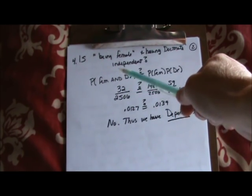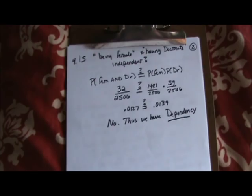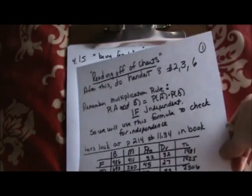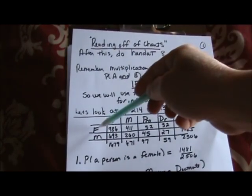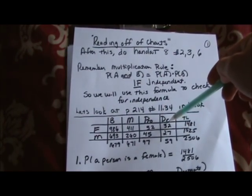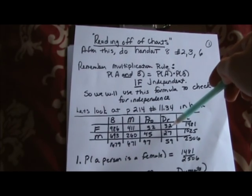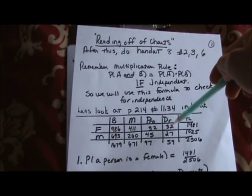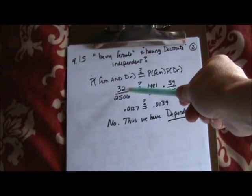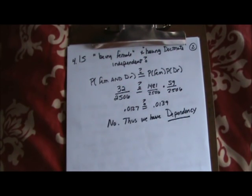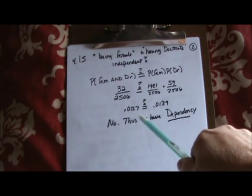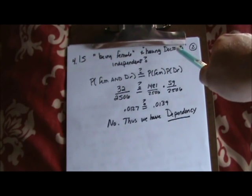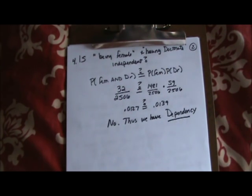If you multiply those two fractions you get 0.0139. Now for female AND doctorate — that's the intersection — we read it directly off the chart. Going back to the chart: I need someone who is female and has their doctorate. There are only 32 of those — that's the intersection we can see right off the chart. So that's 32 over 2506, which gives approximately 0.0128.